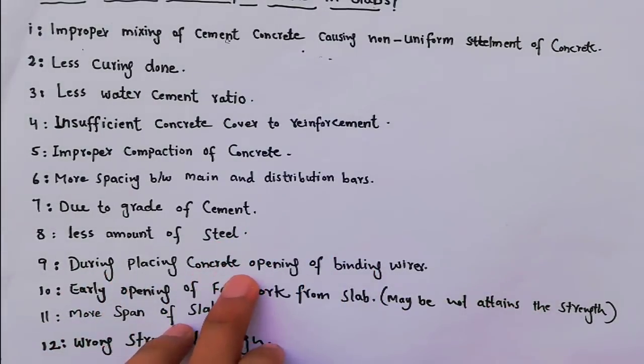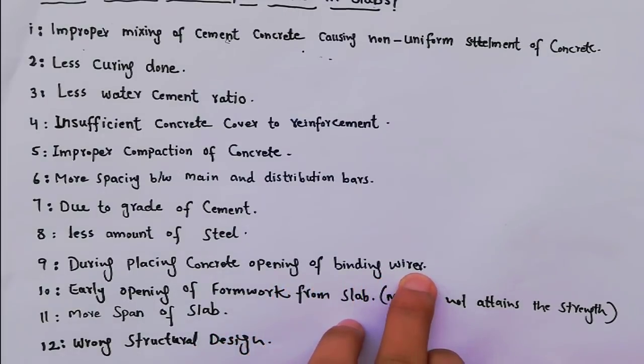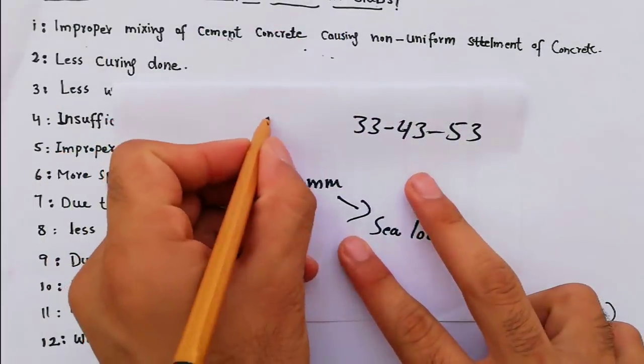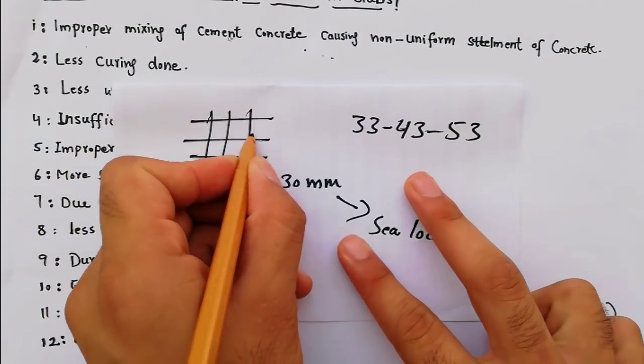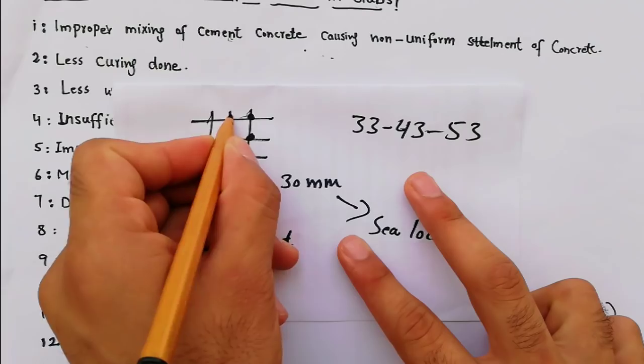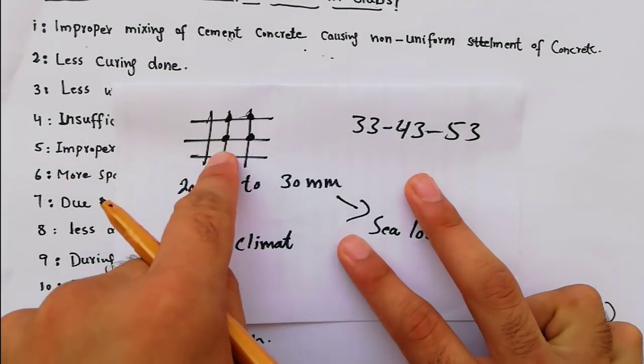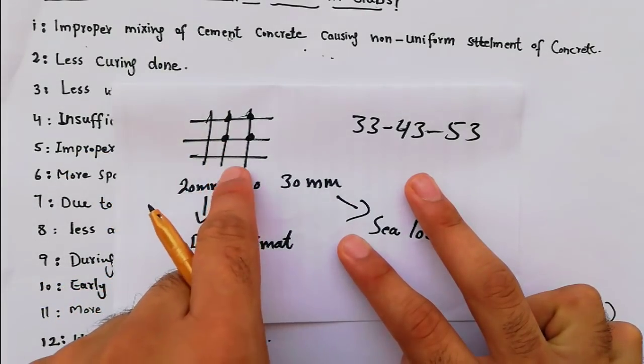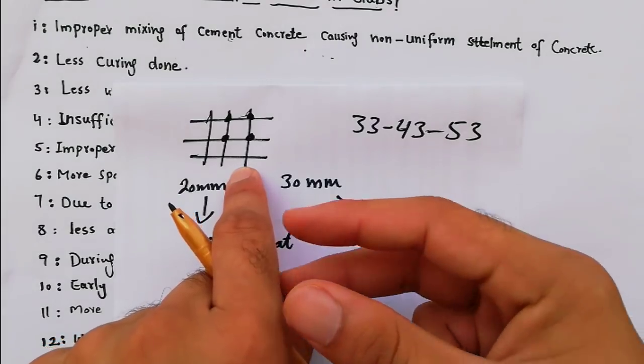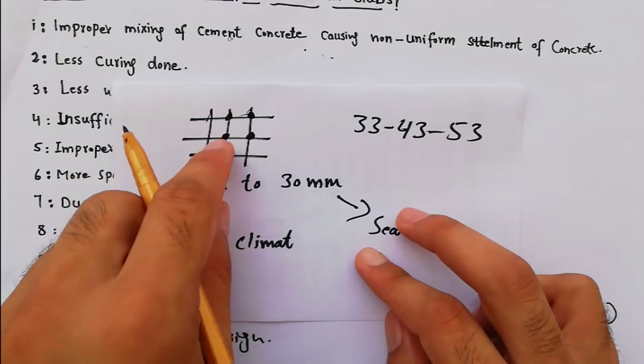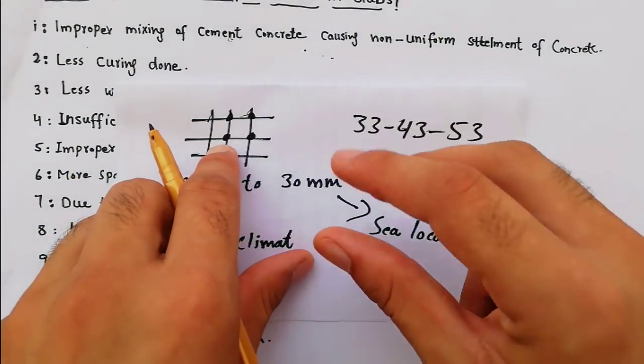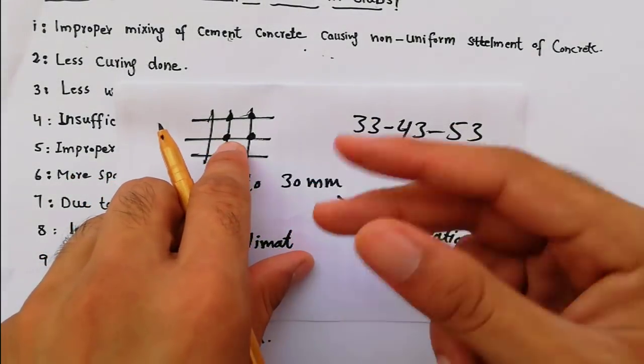Ninth, during placing concrete, opening of binding wires. These are steels and these are binding wires. When we place the concrete, sometimes if the laborers don't care about reinforcement, sometimes they don't provide good binding for the wire.